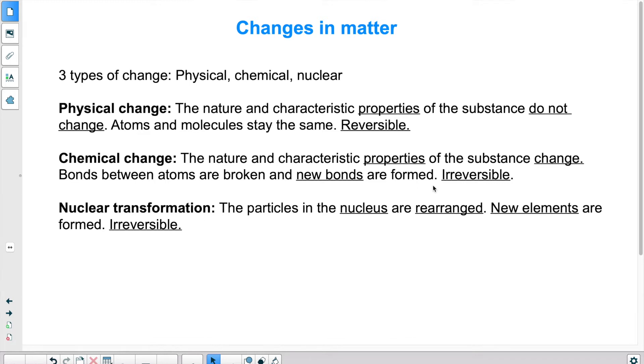Then we have nuclear transformation. It has to do with the nucleus. So it's particles inside the nucleus that change. They rearrange. And because of that, new elements will be formed because we know that the number of protons is very specific, as an example, to a certain type of atom.